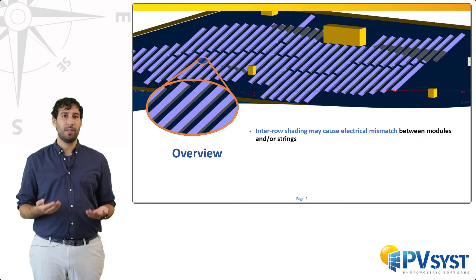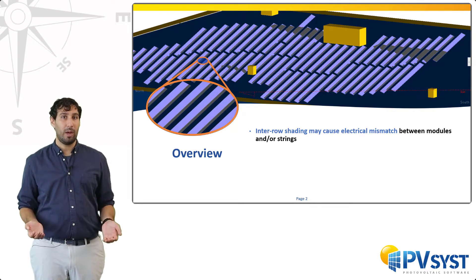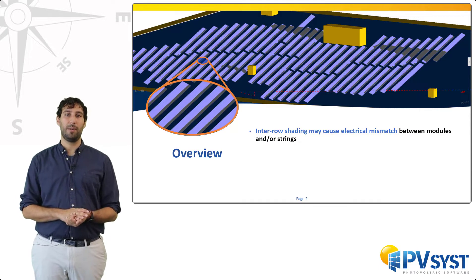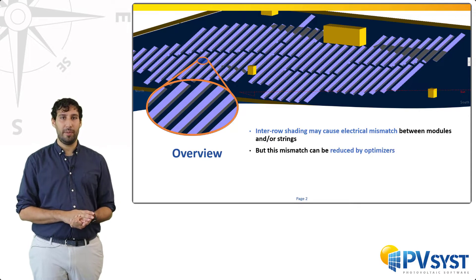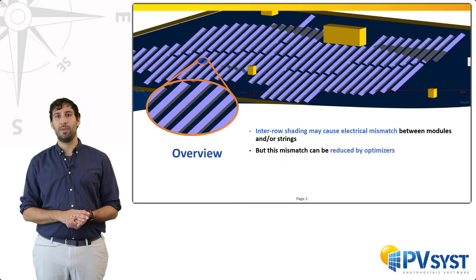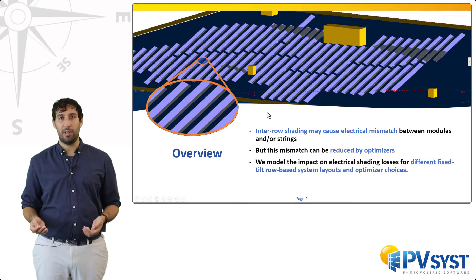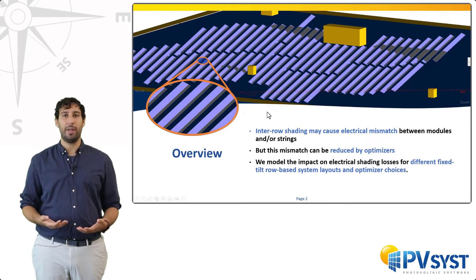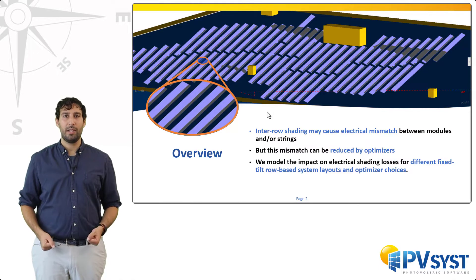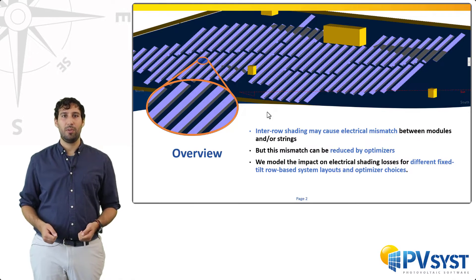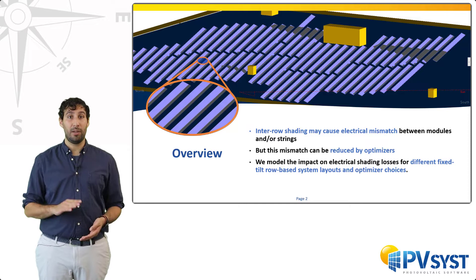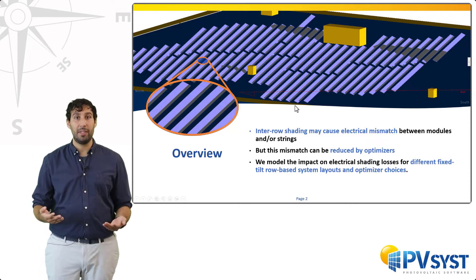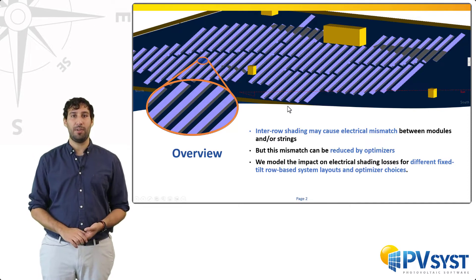Optimizers are components that may allow us to mitigate these effects. I will therefore summarize how they work. Then I will present our study and explain our conclusions in terms of expected losses under modeling. One of the main findings is that for inter-row shadings, due to their regularity, most types of optimizers, including string optimizers, can be effective in mitigating mismatch losses.